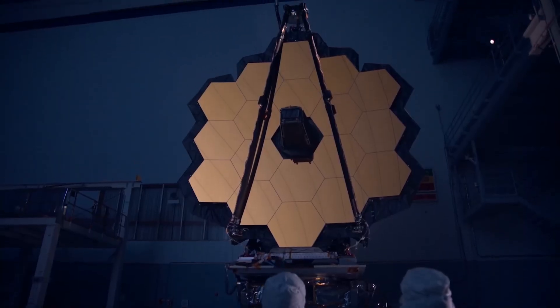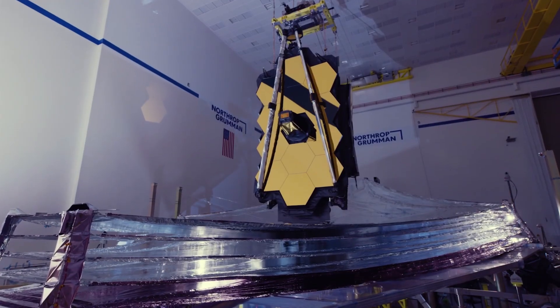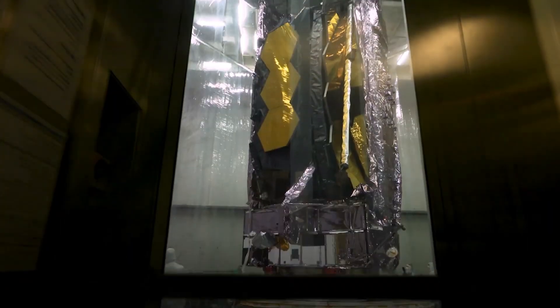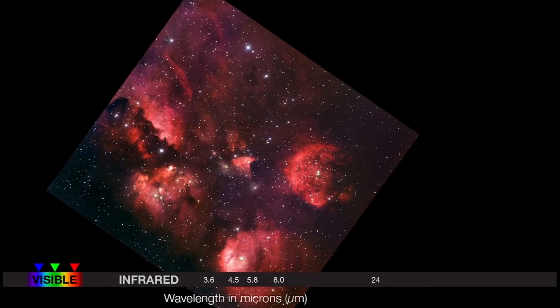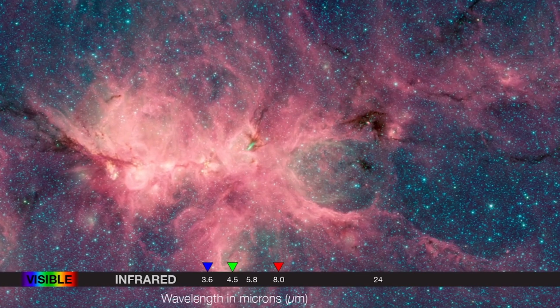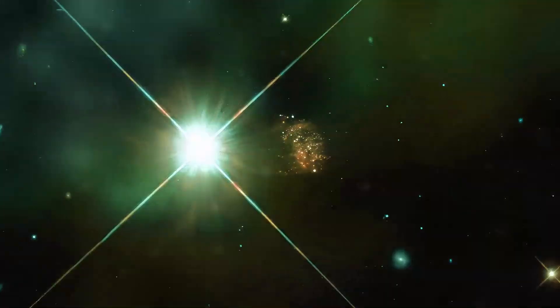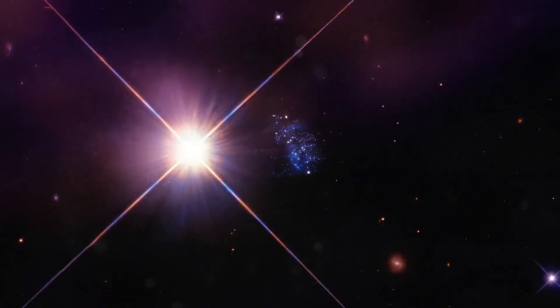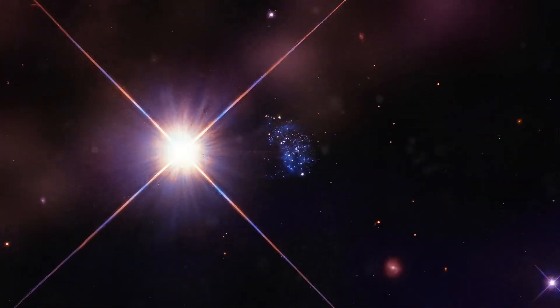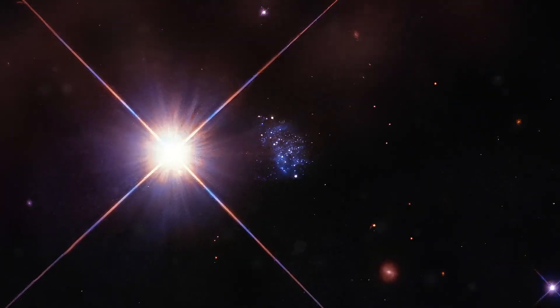The answer lies in using the telescope's high resolution and sensitivity to observe the infrared light emitted by the galaxy. Infrared light has a longer wavelength than visible light, allowing it to penetrate dust and gas that can obscure visible light. This reveals crucial information about the temperature, age, and chemical composition of stars and galaxies.